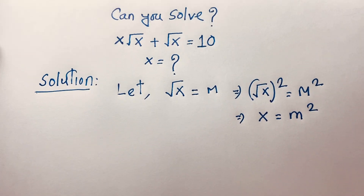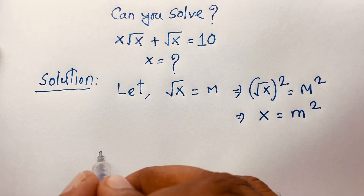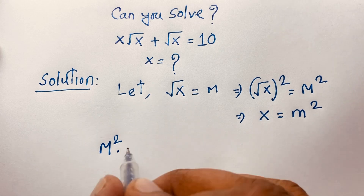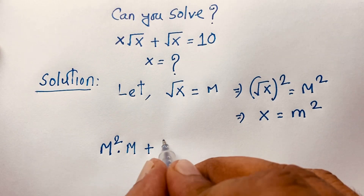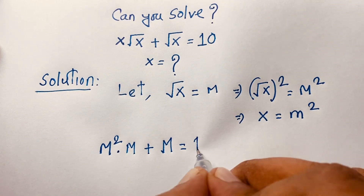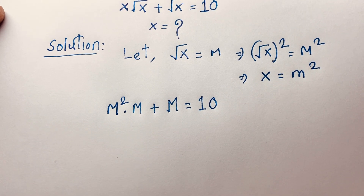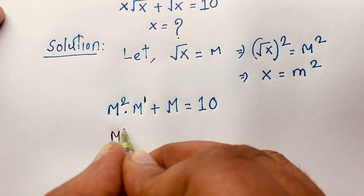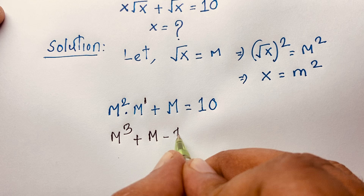Now at this moment, if I put these values into the equation: x becomes m squared, times square root x which becomes m, plus square root x which is m, equals 10. So we get a nice cubic equation: m squared times m is m to the power 3, plus m, and moving 10 to this side gives us minus 10.